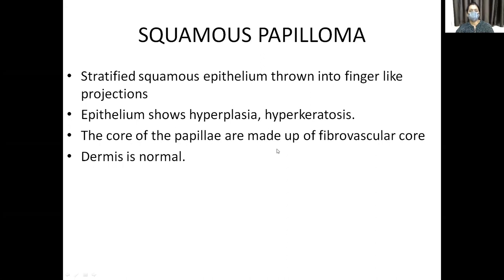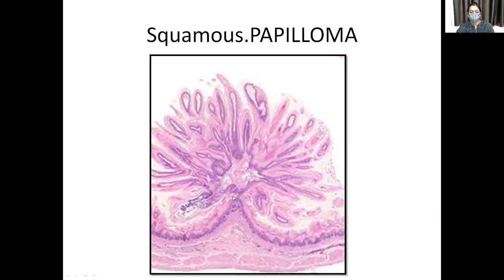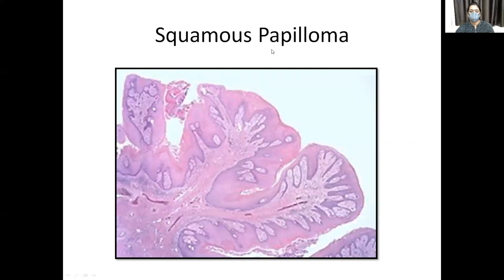Now, the benign proliferation of squamous epithelium into finger-like projections forms squamous papilloma. What we see is: finger-like projections, the epithelium shows hyperplasia (increased number of cells), hyperkeratosis, and the core of the papilla is made up of fibrovascular tissue, while the dermis remains normal. Here in the low-power picture we see the normal squamous epithelium suddenly overgrown into finger-like projections.